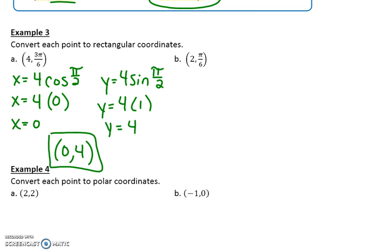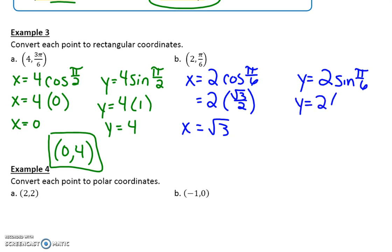Let's take a look at the second one. Again, X is R, which is 2, times the cosine of your angle, which is pi over 6, or 30 degrees. So we have 2, and then the cosine of that was square root of 3 over 2. So you end up with square root of 3, because those 2's cancel out. 2 divided by 2 is 1. And then we find our Y value, R times sine of our angle. Remember that the sine value of pi over 6 is 1 half, and 2 times 1 half is 1. So our ordered pair is the square root of 3, 1.